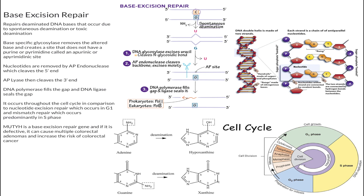Sometimes you'll be asked when base excision repair occurs during the cell cycle. In comparison to nucleotide excision repair, which occurs only in G1, and mismatch repair, which occurs mostly in S phase, base excision repair can occur at any point in the cell cycle.